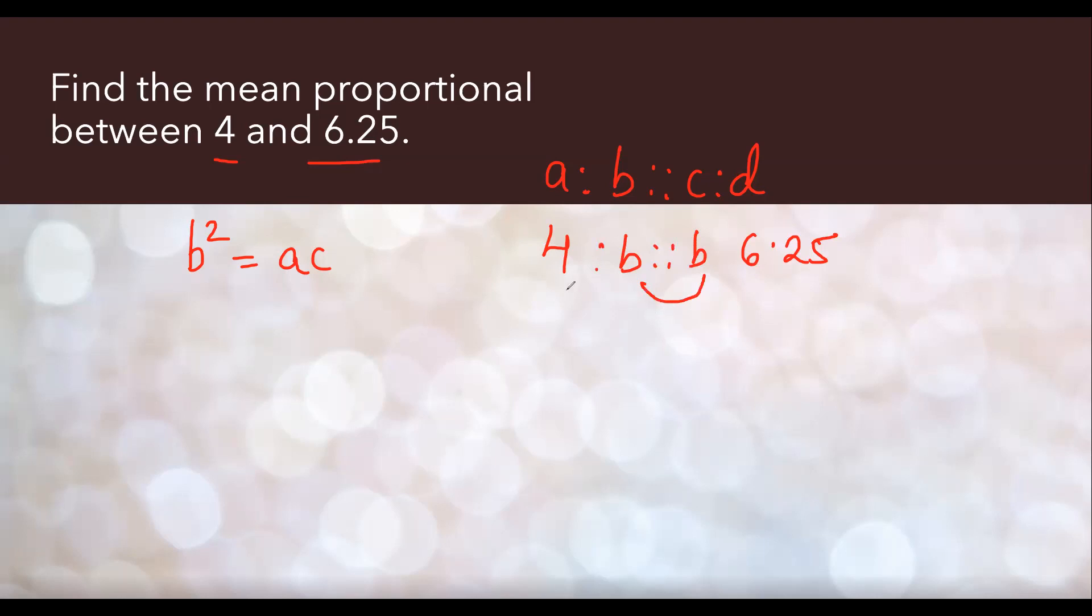Product of mean is equal to product of extreme, which means b square equals to 4 into 6.25. b will be under root 4 into 6.25, which is 25 by 100.